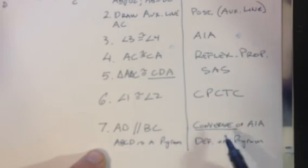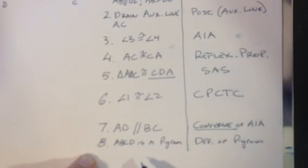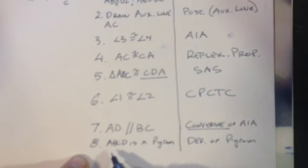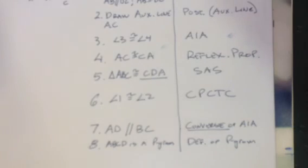And step 8 then is our final, final step that we have now shown that ABCD is a parallelogram. Okay? Hopefully that's helpful. I'll see you next time. Bye-bye.